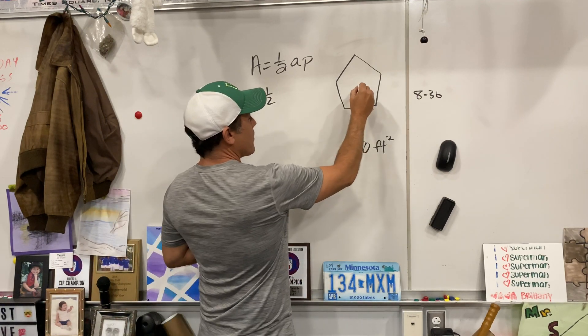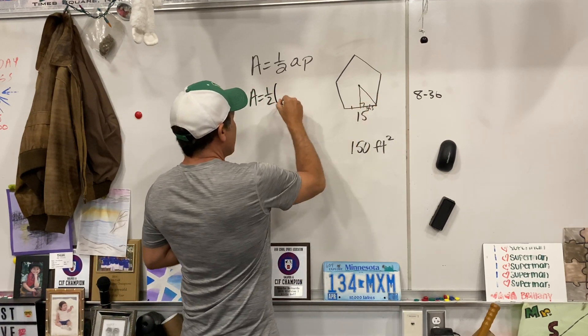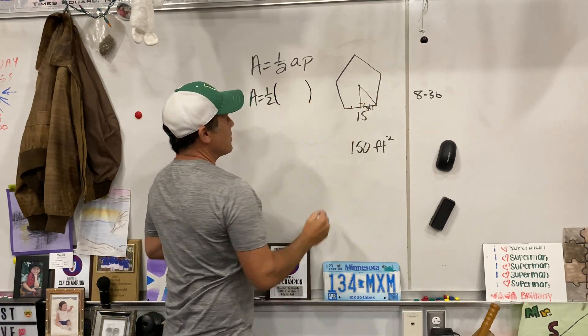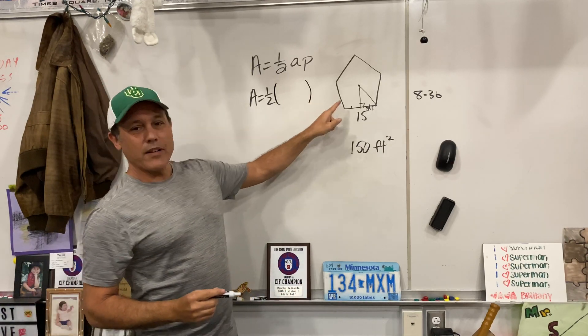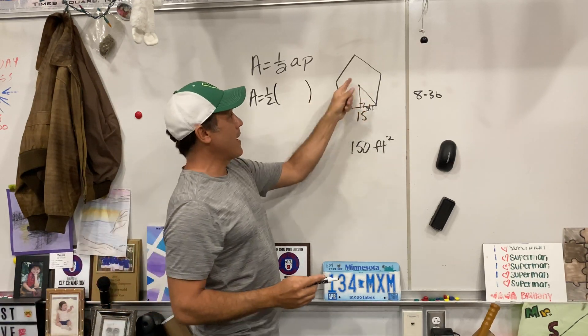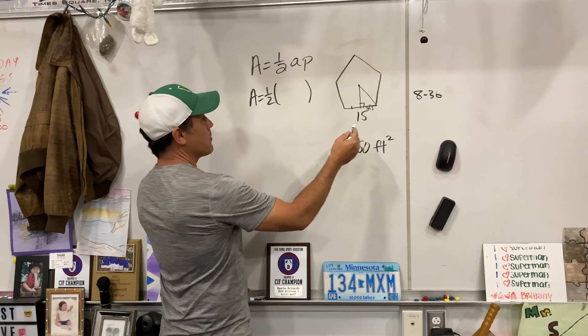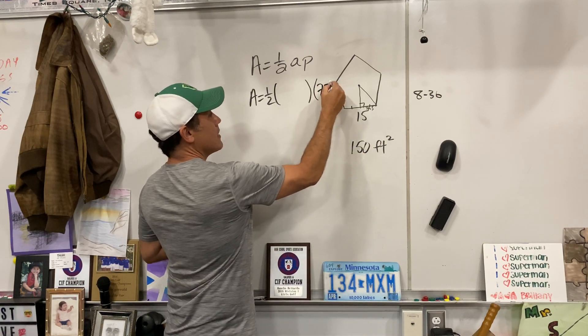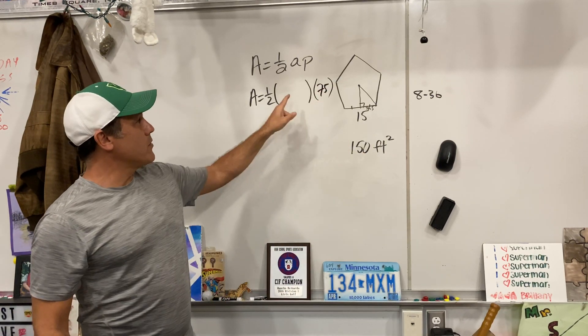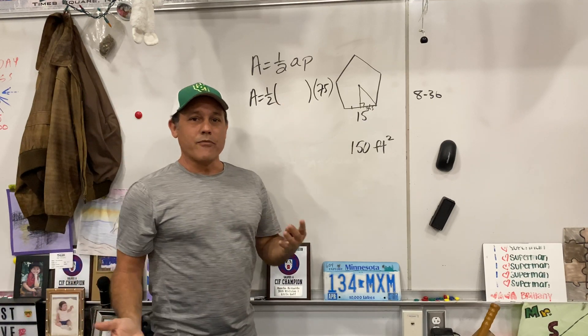So we've got to do a little work for the apothem. So something's got to go in there pretty juicy. Let's do something we know. Can we figure out the perimeter pretty easy? We've got five sides, each is 15. Five times 15 is 75. So now all we've got to do is find the apothem, and we're home free.